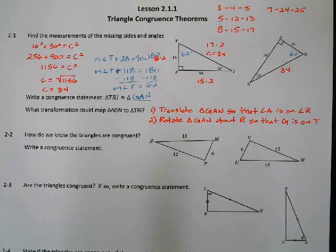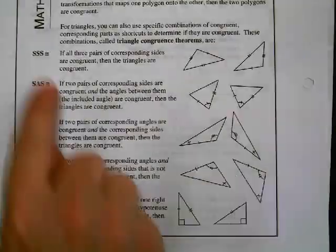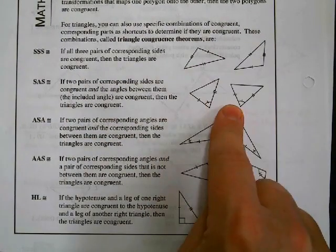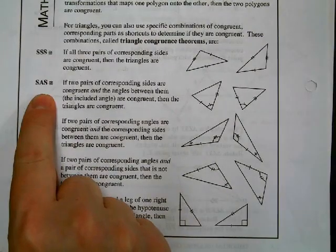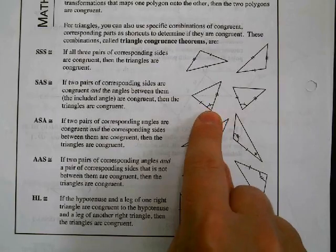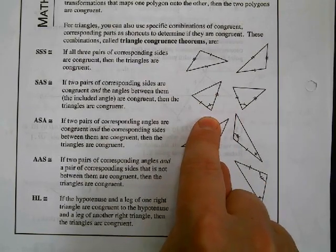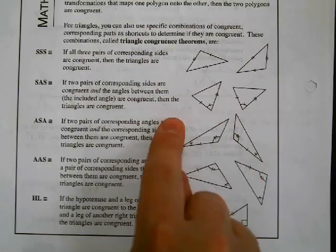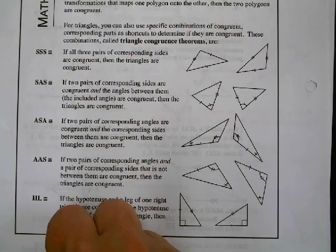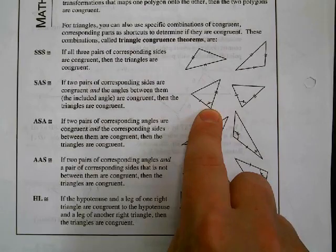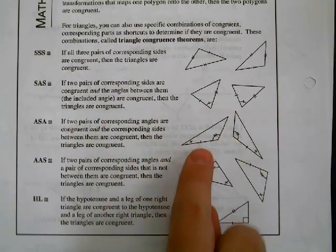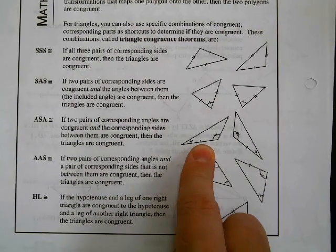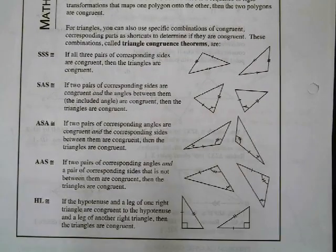Back from last year, you did triangle congruence theorems — there were five of them. The Side-Side-Side theorem says that if all the sides are congruent, the whole triangles are congruent; you don't need the angles. Side-Angle-Side says that if you have two sides and the included angle — the angle right in between the two sides — that is enough to prove triangles congruent. Angle-Side-Angle is similar but uses two angles and an included side, the side right between the two angles.